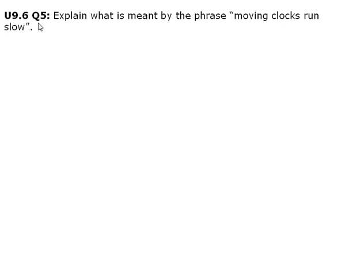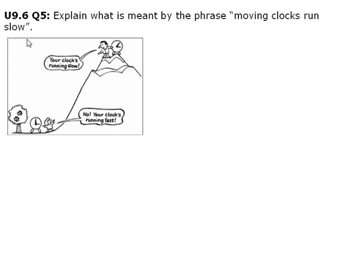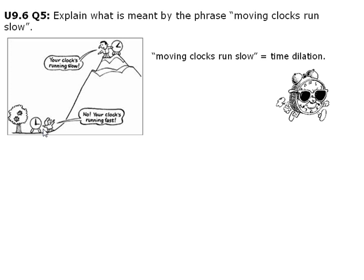Unit 9.6 Question 5: Explain what is meant by the phrase 'moving clocks run slow.' This phrase means that time in a moving reference frame will pass more slowly for those who are observing at rest. This effect is also called time dilation.